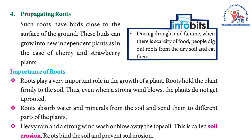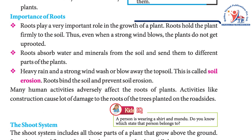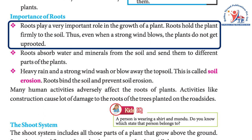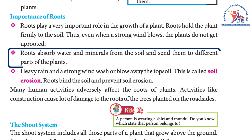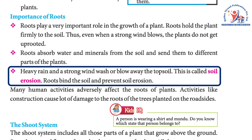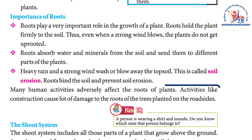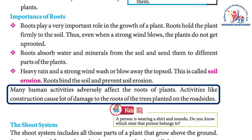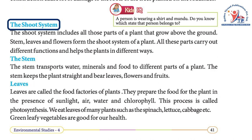During drought and famine, when there is scarcity of food, people dig out roots from the dry soil and eat them. Roots play a very important role in the growth of a plant. Roots hold the plant firmly to the soil, so even when a strong wind blows, plants do not get uprooted. Roots absorb water and minerals from the soil and send them to different parts of the plant. Heavy rain and strong winds can wash or blow away the topsoil — this is called soil erosion. Roots bind the soil and prevent soil erosion. However, many human activities like construction cause damage to the roots of trees planted on roadsides.